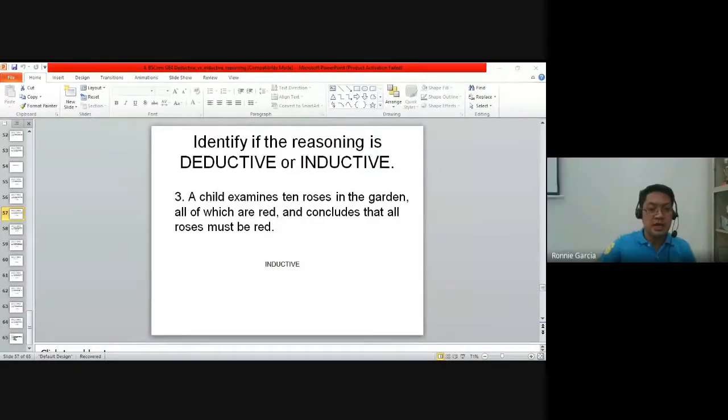Number three is inductive. Why is number three inductive? The child examined only ten roses, so this is specific. Then they made a generalization that all roses must be red because the roses they saw were red. So that is an example of inductive, from specific to generalized.